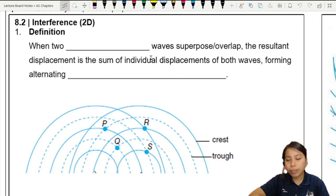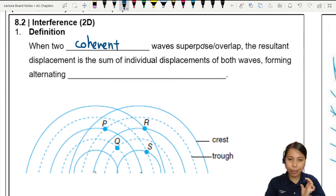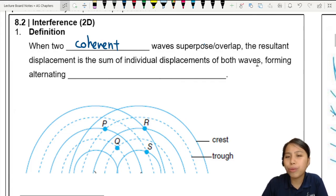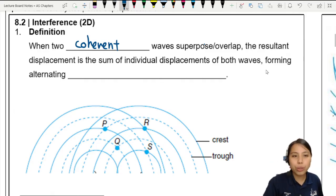So what is interference? Well, let's start with the definition. Still waves overlapping, right? So when two coherent waves superpose or overlap. Later we'll come to what that word means. But first, overlap also means meet. The resultant displacement is the sum of individual displacement of both waves. That's the same as what we have been looking at so far. But instead of forming what we call previously antinodes and nodes, we are in this two-dimensional space, we will use these terms more called alternating maxima and minima.